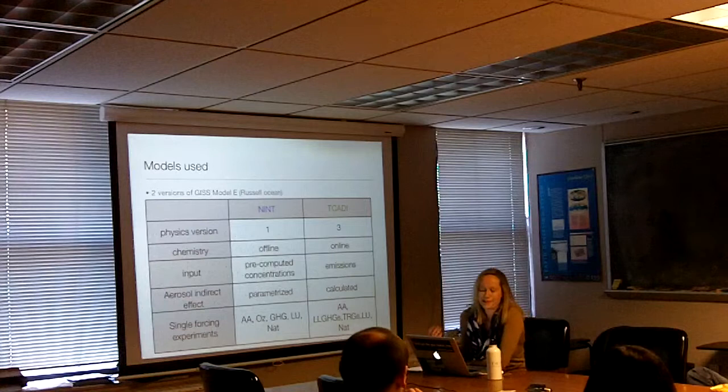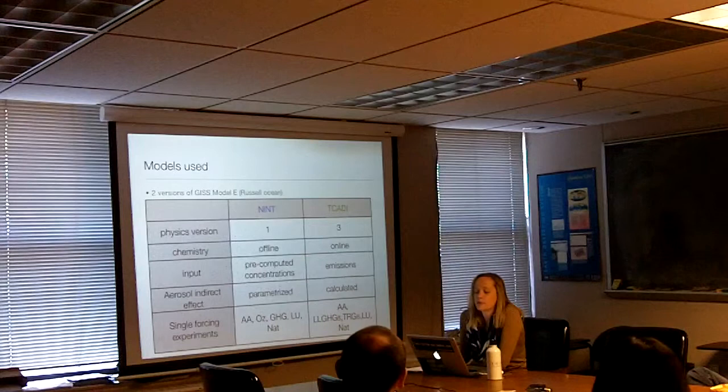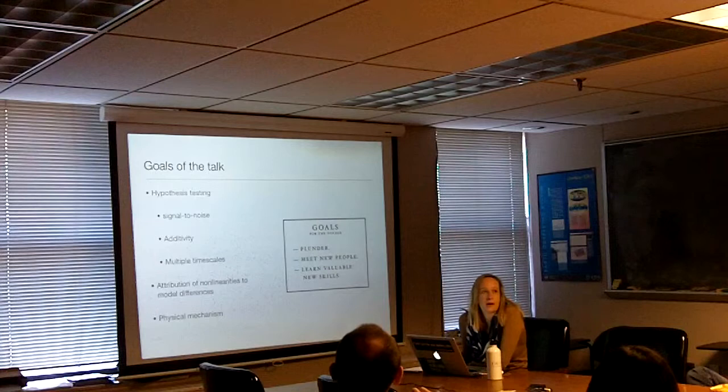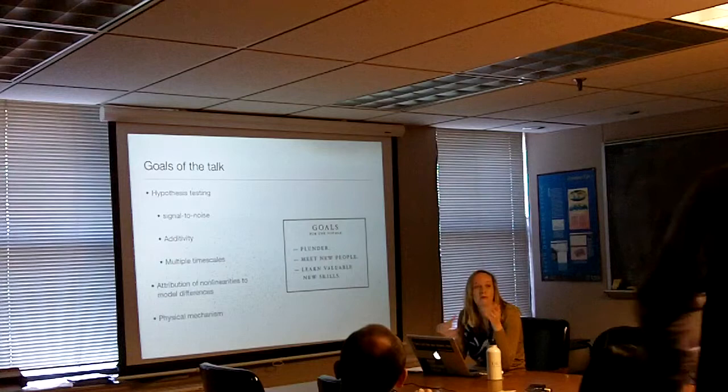This was made for another audience — I don't need to tell you about the GIST model — but I used basically two versions: the R model. I also checked GIST H, which looks pretty similar, so we're going to focus on the R here, using the NIN and TCAT versions. In the talk, I'll discuss a couple of hypotheses that I'm testing simultaneously: a signal-to-noise hypothesis and an additivity hypothesis, tested at multiple timescales. I'm going to try to attribute the non-linearity — spoiler alert — that we find to differences in the models, and talk about the physical mechanisms behind this.